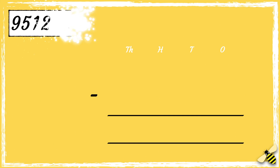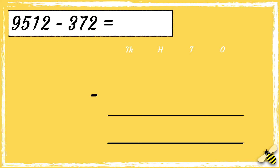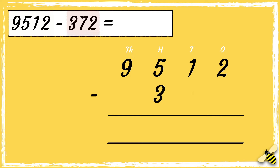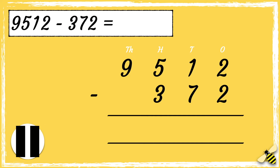Here's another one: nine thousand five hundred and twelve subtract 372. So we have nine thousands, five hundreds, one ten, and two ones, then we have three hundreds, seven tens, and two ones. Now that we're set up, we're ready to subtract. Pause the video to give you time to work out the answer. Press play when you're done.